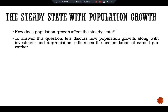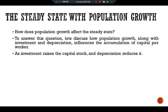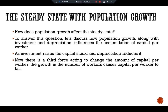To answer this question, let's discuss how population growth, along with investment and depreciation, influences the accumulation of capital per worker. As investment raises the capital stock and depreciation reduces it, there is a third force acting to change the amount of capital per worker: the growth in the number of workers causes capital per worker to fall.